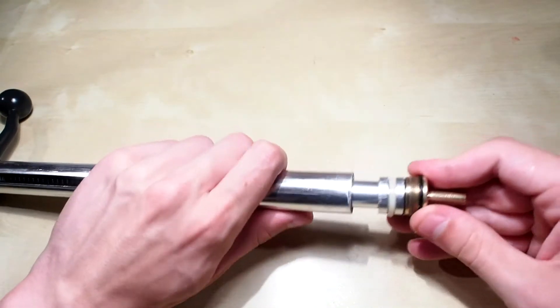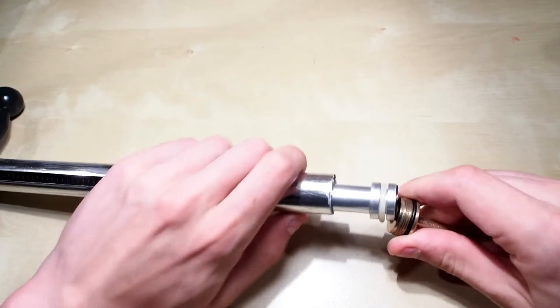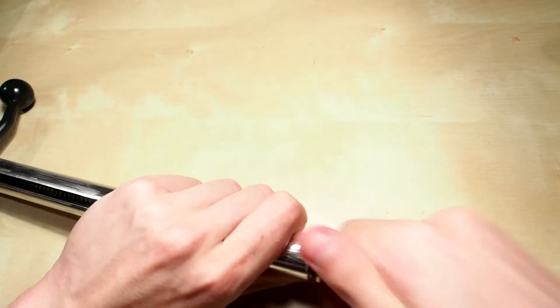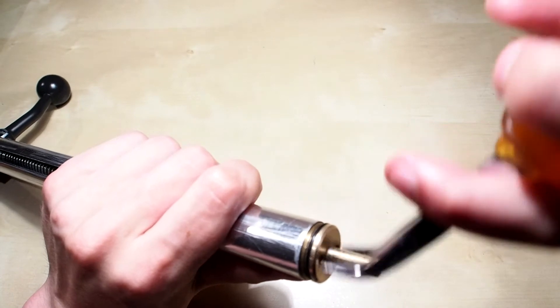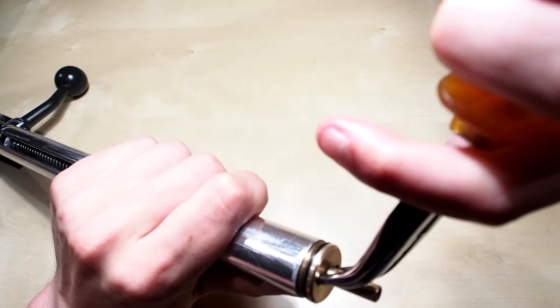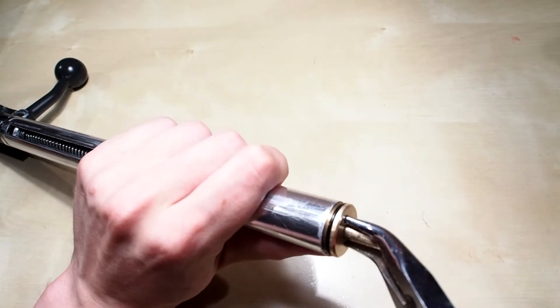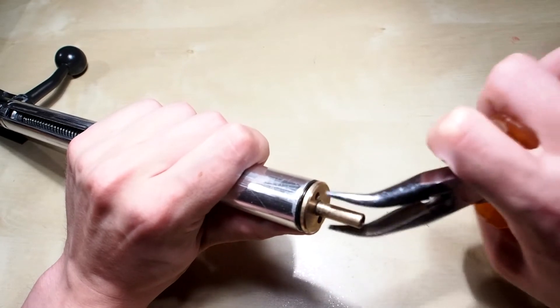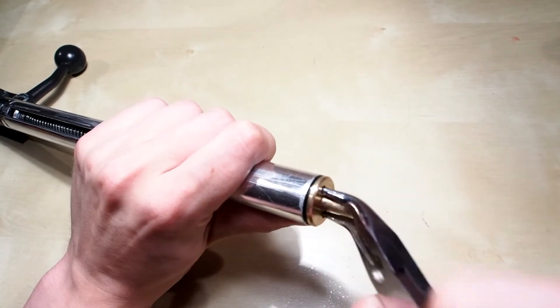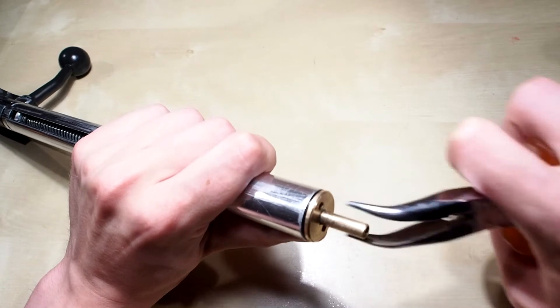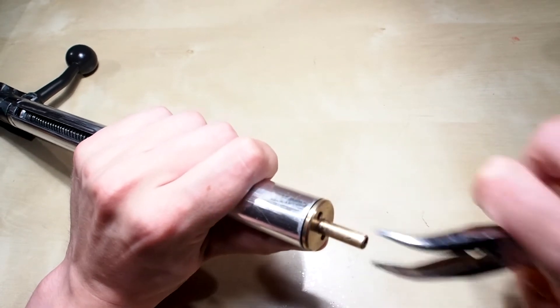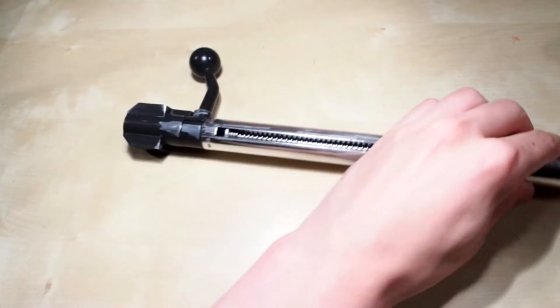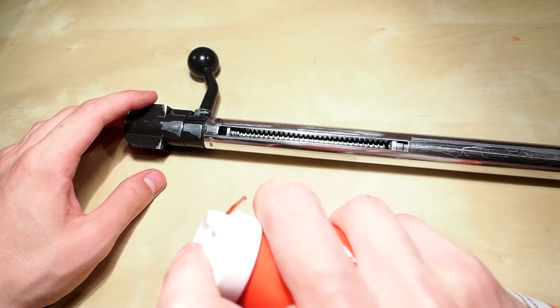When you have put in the piston you can screw the cylinder head back onto the cylinder. When finished you can just spray some silicone lube on the spring and spring guide.